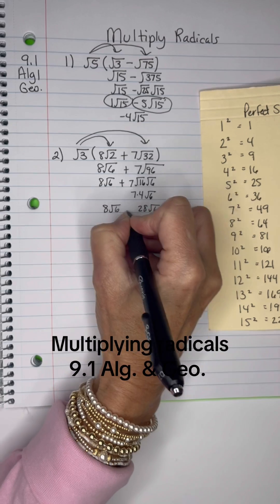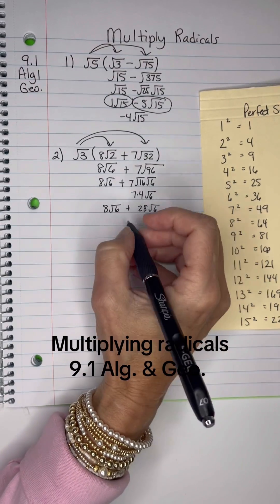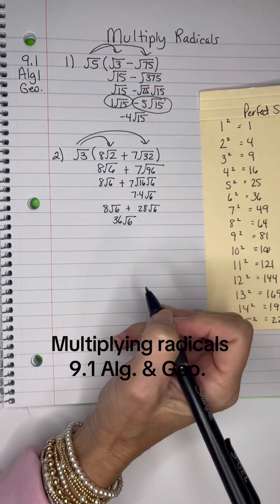I have the 8 root 6 that will be added to the 28 root 6, and 8 plus 28 would be 36 root 6. Keep those radicands.